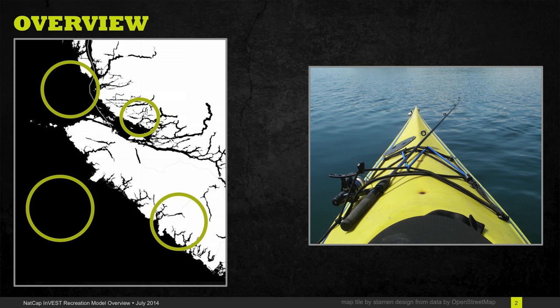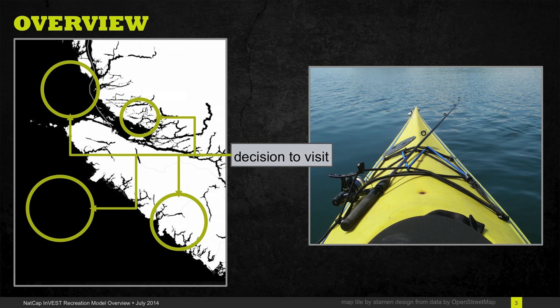When we talk about recreation, we're talking about activities that people do in their leisure time. For example, people might like to go hiking, kayaking, or fishing, and we need models that can help us determine where those people go and what influences their decision to go to a particular place.